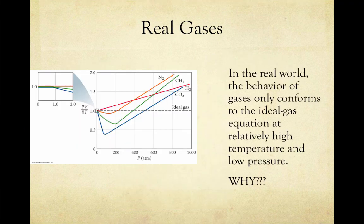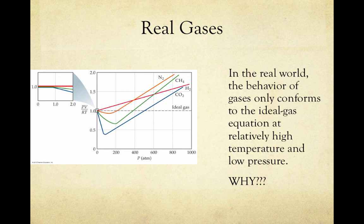Here we've graphed the relationship between PV/RT versus P. For an ideal gas, represented by the dotted line, this relationship should equal 1. Notice these gases deviate significantly from ideal behavior — but look at the pressure scale, which goes all the way up to 1,000 ATM. The inset box shows a blowup of 0 to 2 ATM. Between 0 and 2 ATM, the gases hardly deviate at all, and from 0 to 1 ATM there's nearly no deviation. Since we almost always work at pressures of about 1 ATM, the ideal gas law works just fine.